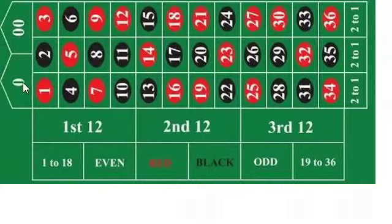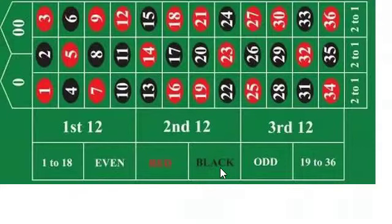So this is a roulette wheel that consists of a zero and two zeros. If you've ever played roulette, it's actually a pretty easy game. What's the probability of the ball landing on black — a black number? And then we're going to ask some other questions, like what's the probability of getting three blacks in a row, or four blacks in a row.